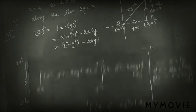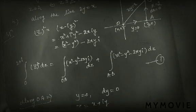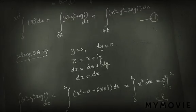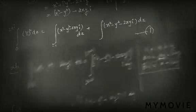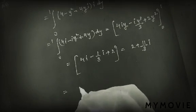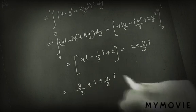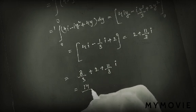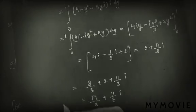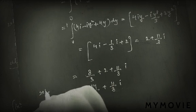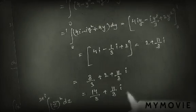Now adding the two parts: the OA path gave 8/3 and the AB path gave 2 + 11i/3. So the complete integral equals 8/3 + 2 + 11i/3 equals 14/3 + 11i/3. This is the complete answer for the integral from 0 to 2+i of |z̄|² dz.